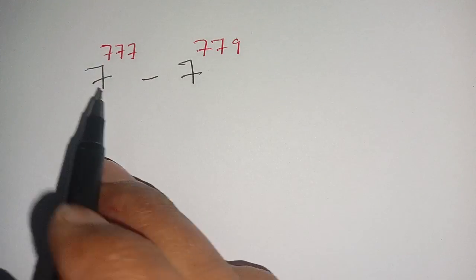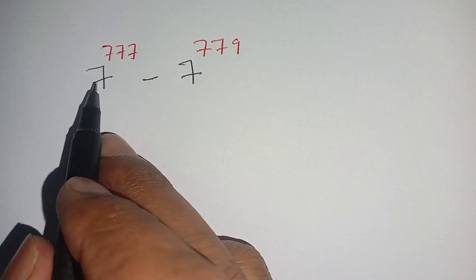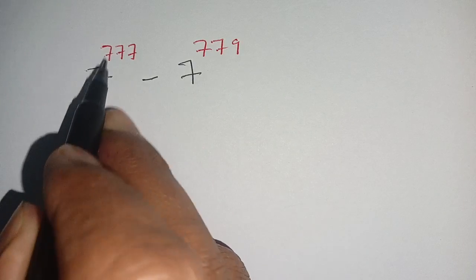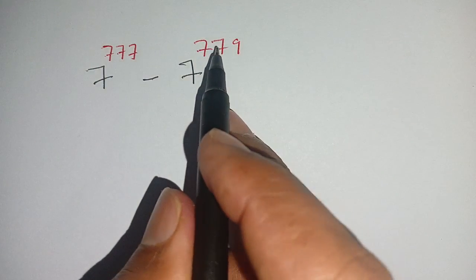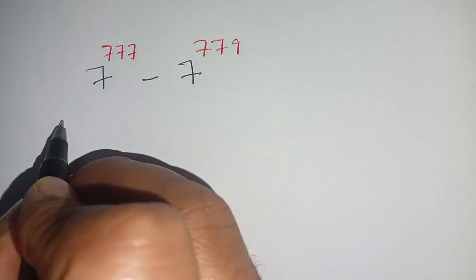Hello everyone, in today's video we are simplifying this exponential problem: 7 to the power of 777 minus 7 to the power of 779. Let us solve this.